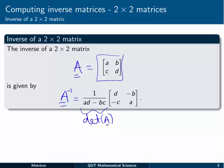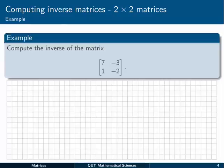So that's our rule for the inverse of a 2x2 matrix. Let's have a look at an example here. We want to compute the inverse of the matrix 7 minus 3, 1 minus 2. And I'm going to call that A. And it's a 2x2 matrix, so I can use my rule.